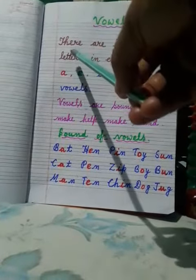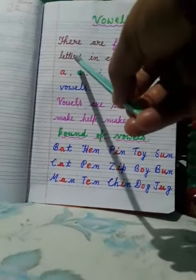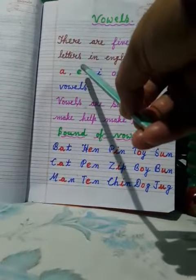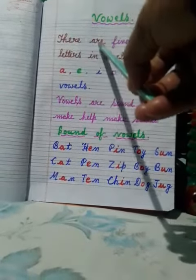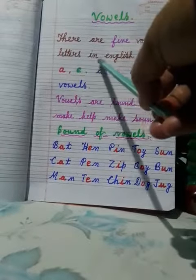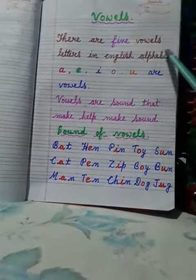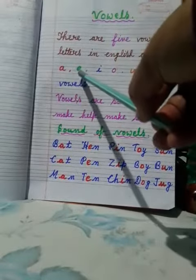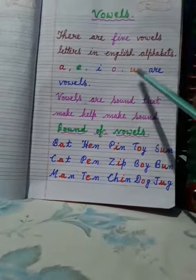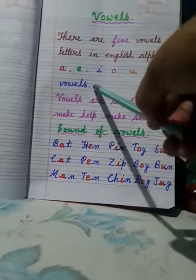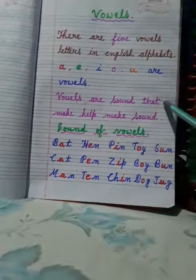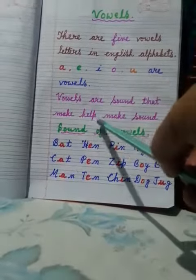Children, today we have learned vowel letters. There are five vowel letters in English alphabet: A, E, I, O, U are vowels.